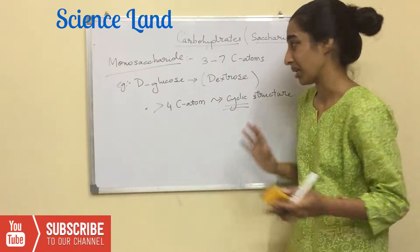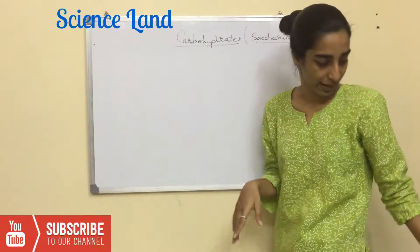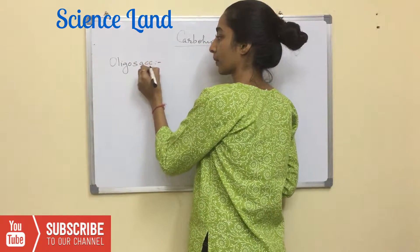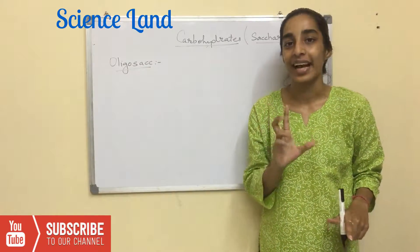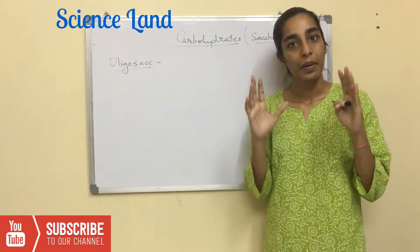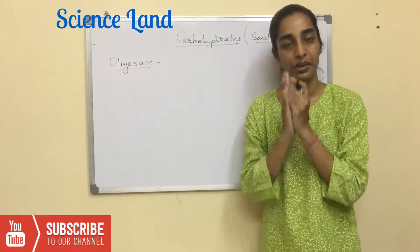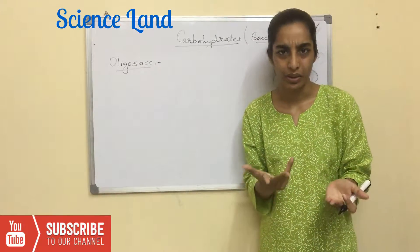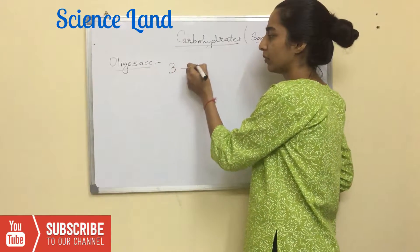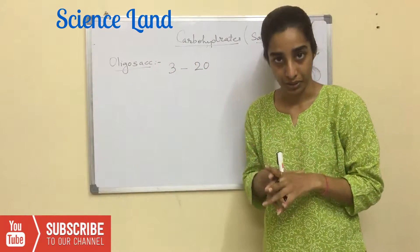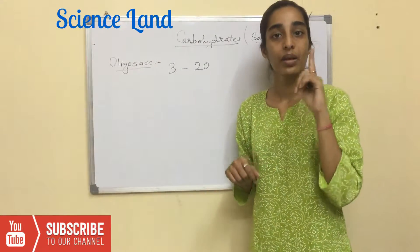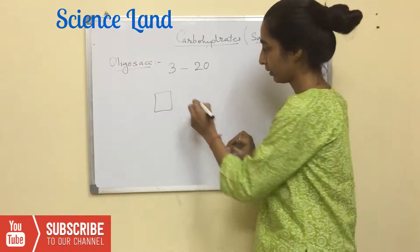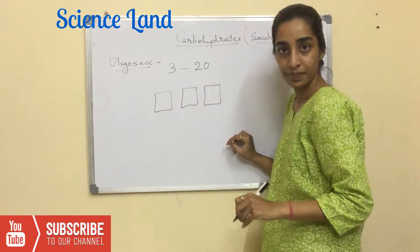Moving to oligosaccharide. Oligosaccharide basically is units of monosaccharides coming together to give you a compound. How many monosaccharide units? Basically it could be 3 to 20 monosaccharide units coming together and forming one molecule of oligosaccharide. For example, this is my first monosaccharide, second, third.